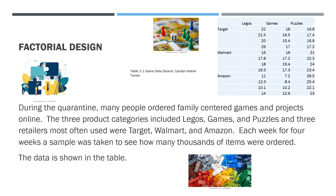During the quarantine, many people ordered family-centered games and projects online. The three product categories were Legos, games, and puzzles. The three retailers most often used were Target, Walmart, and Amazon. Each week for four weeks, a sample was taken to see how many thousands of items were ordered. The data is shown in the table.